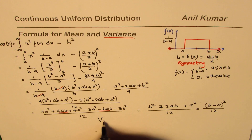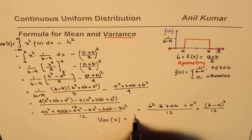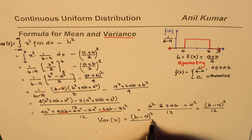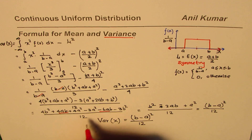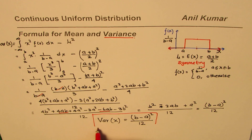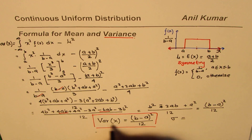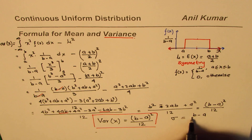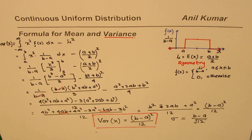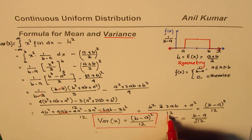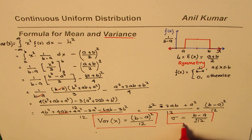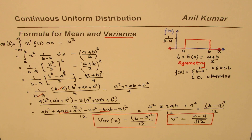That simplifies to (b - a)² / 12. So for a continuous uniform distribution, the variance equals (b - a)² divided by 12. The standard deviation is the square root of the variance, which is (b - a) / √12. These are the two formulas we use most of the time for continuous uniform distribution. I hope you find it interesting — I'm Anil Kumar, please share and subscribe. Thank you and all the best.